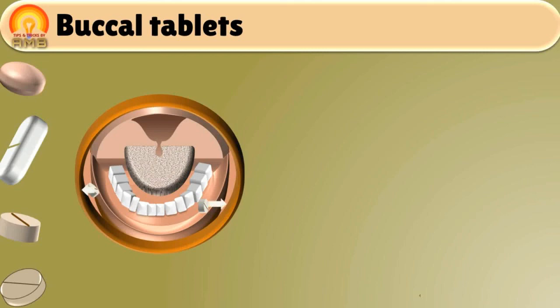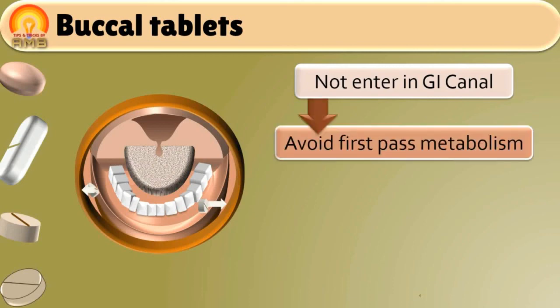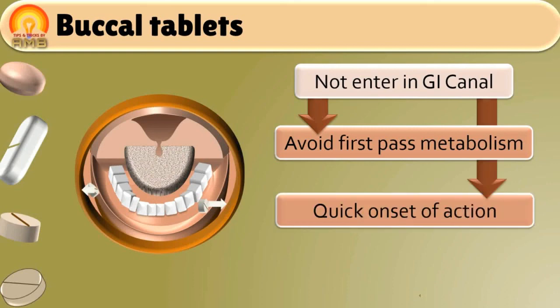The drug is absorbed directly into blood through mucous membrane of the mouth cavity without passing into gastrointestinal canal. As it avoids entry of drug in gastrointestinal tract, drug is not exposed to first pass metabolism also. Such tablets have quick onset of action as compared with orally ingested tablets.